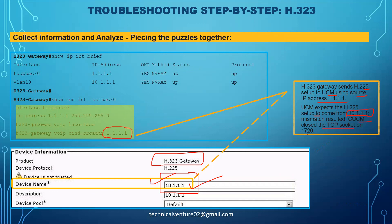The fix is straightforward: either change the device name on CUCM from 10.1.1.1 to 1.1.1.1, or change the 'h323-gateway voip bind source-address' on the router from 1.1.1.1 to 10.1.1.1 - both should match. I hope you learned something from this scenario and the gateway commands. If you liked this video, please like, share, and subscribe, and press the bell icon for notifications on upcoming videos. Thank you.